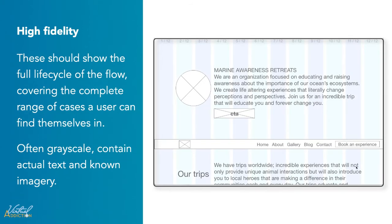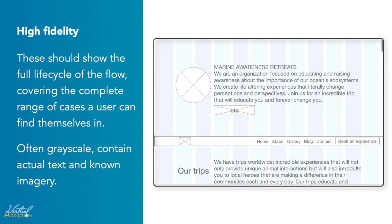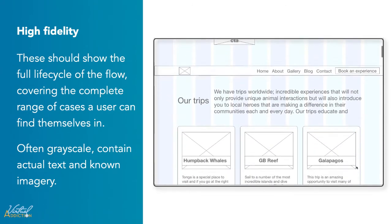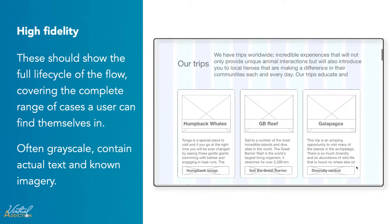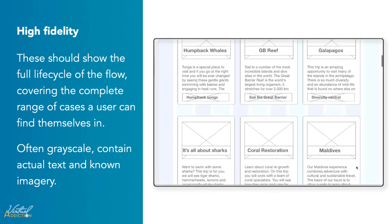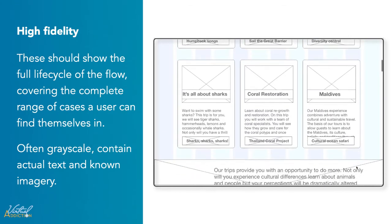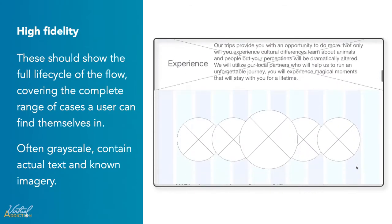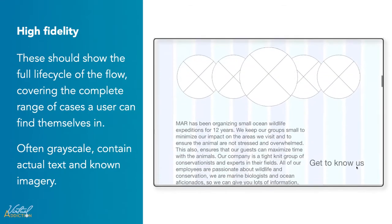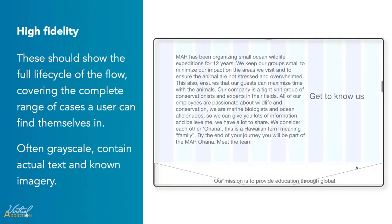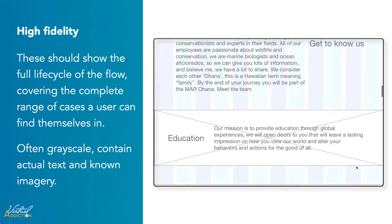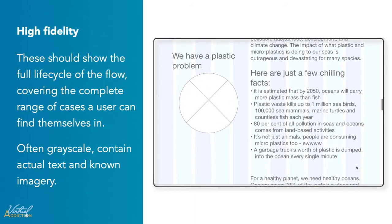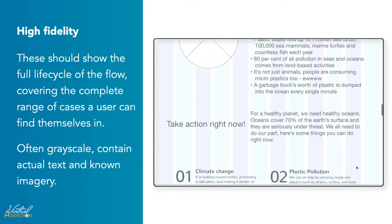At this point, your wireframe should show the full lifecycle of the flow, covering a complete range of cases that a user can find themselves in. This should include errors, empty states, and how the website might look for first-time users as opposed to returning users.